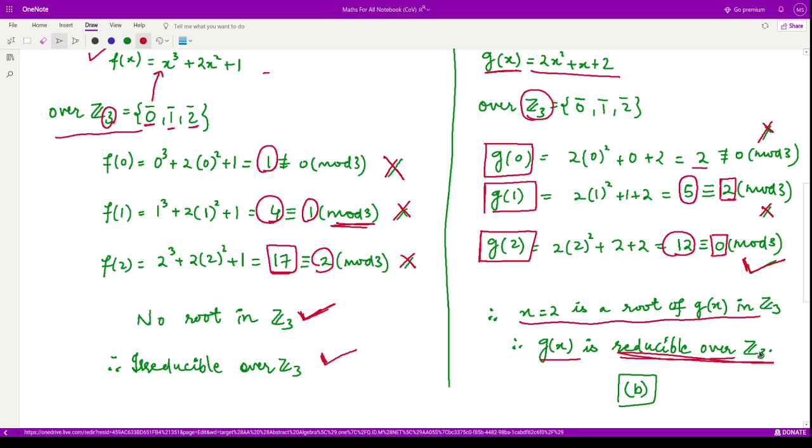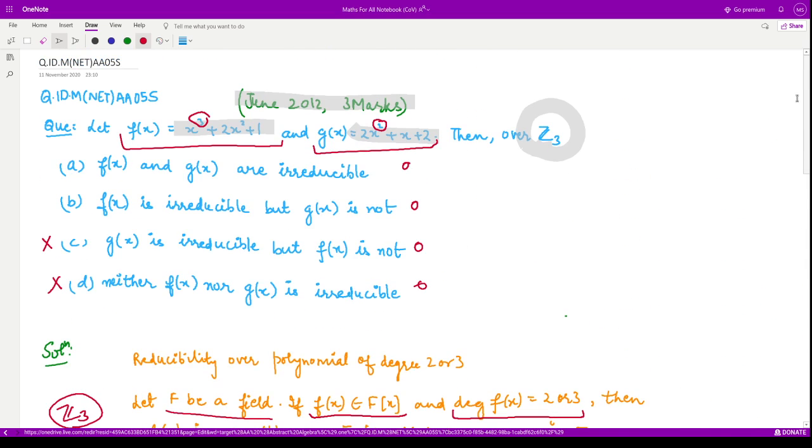So now if g(x) is reducible over Z₃, that means our option B is the correct option, because our f(x) is irreducible but g(x) is not irreducible. Option B is the correct option. Well, that is it for this video. Thank you.